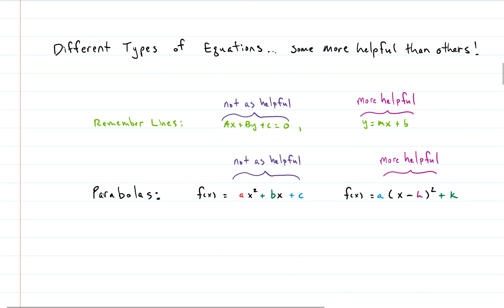Not all equations are created equal — some are more helpful than others. Back in the line world, the equation ax + by + c = 0 is valid but not super helpful because it doesn't give you the slope or y-intercept. But slope-intercept form — solving for y — gives you both the slope and y-intercept right off the equation, no algebra needed.